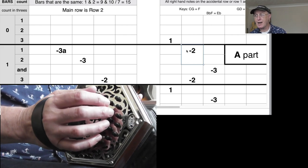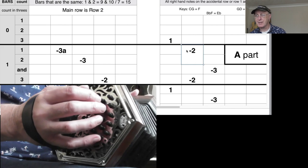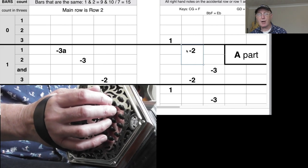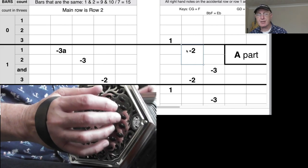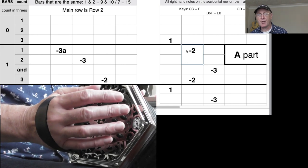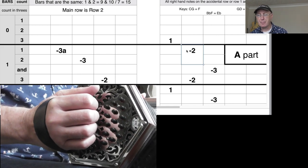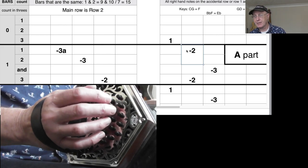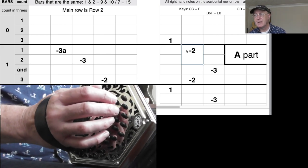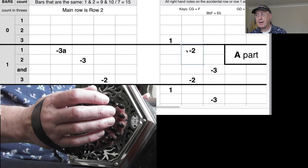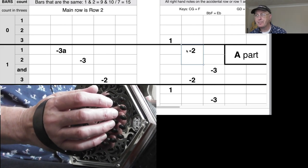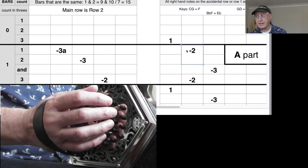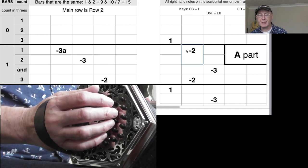Now we start off with button number seven. All these notes are on row two, we know that because there aren't any boxes around them. If you have a note on row one I put a box around it, a thick black border I should say. So they're all on row two, so it's button seven, button eight, button seven, and finger two, finger three, finger two, and it's one two and three.